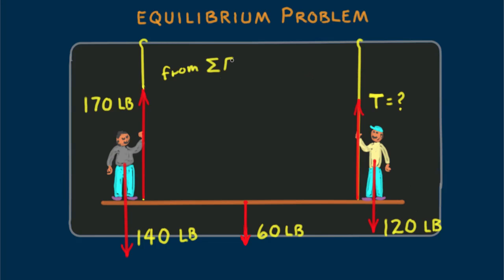From sum of the forces equal zero, 170 pounds, plus T, what we're looking for, minus 140 pounds, minus 60 pounds, minus 120 pounds, equals zero.